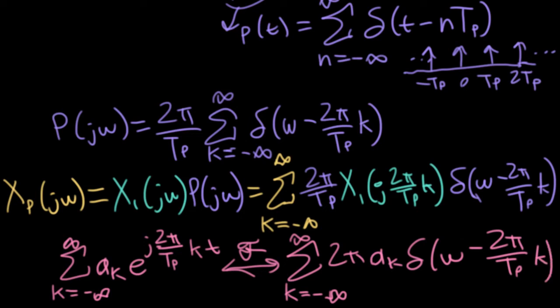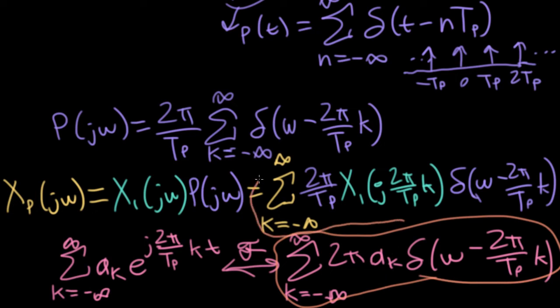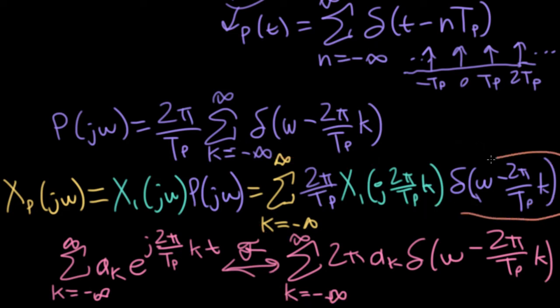But now if I look at this expression here from lecture 22, and I compare it with this expression here, we can see that they are very, very similar. We have the delta functions that are the same, we have this giant sum, we have a 2 pi here and a 2 pi here.